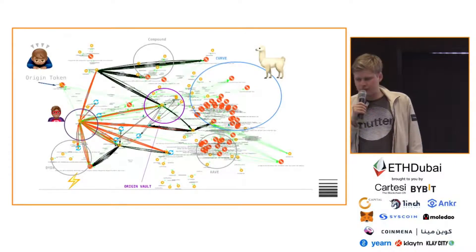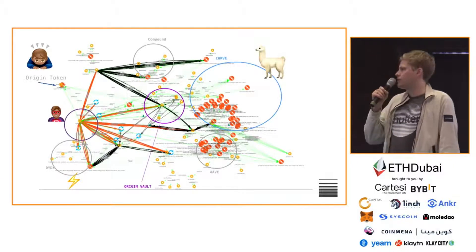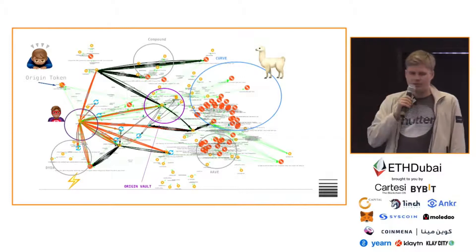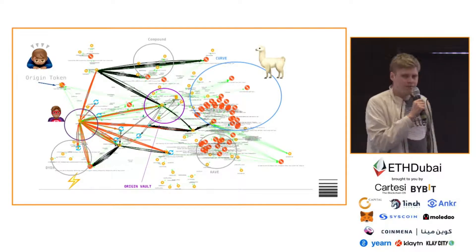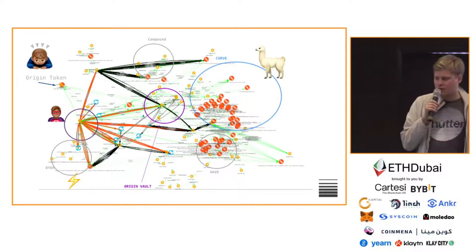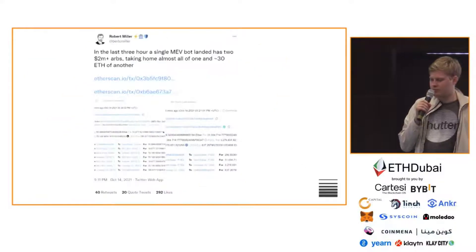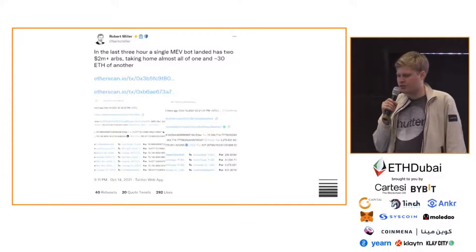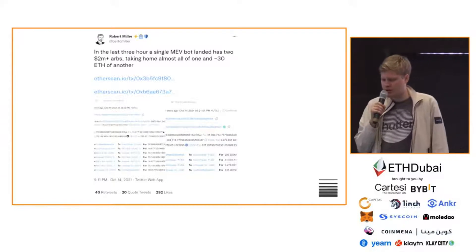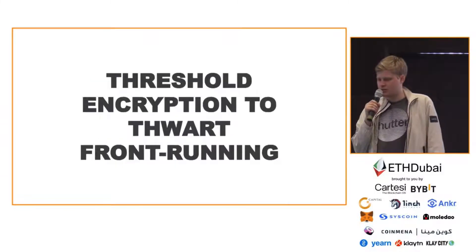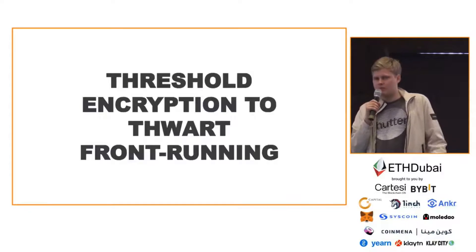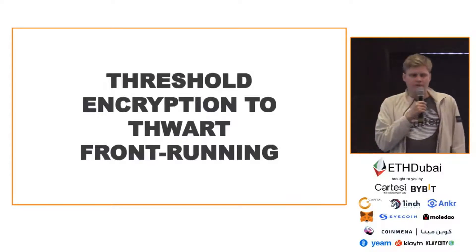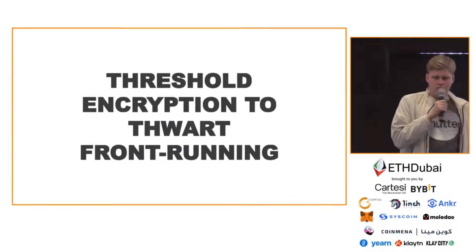These are just some pictures you've probably seen on Twitter — very sophisticated arbitrage, people making $2 million per arbitrage. That was explaining the problem of MEV and layer 2.